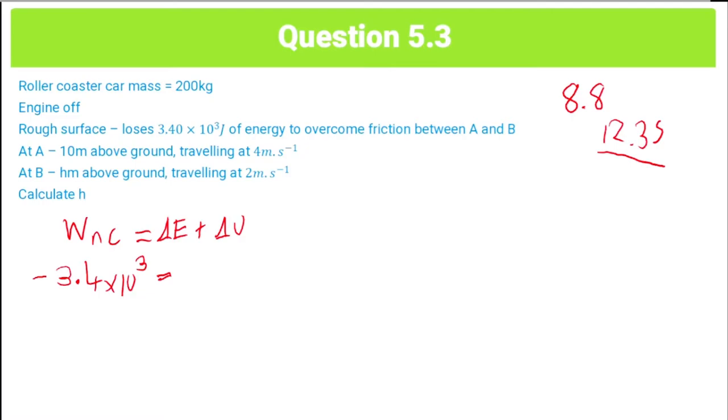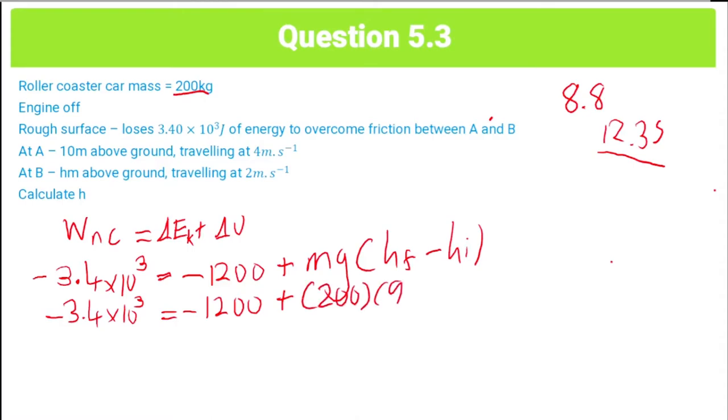So delta EK over here, you're supposed to calculate in the previous question, and you should have gotten negative 1,200 joules. And now this delta U bit, that's going to be mg into H final minus H initial. So we can simplify that down here, equals negative 1,200 plus. Our mass is 200 here, and G is 9.8 as per your formula sheet. So that's going to be 9.8 into H final. We don't know, that's what we're solving for. So HF minus HI, we know we've been given that 10 meters above the ground. So that's 10.